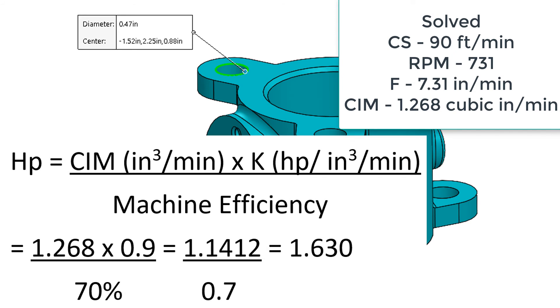Now we can solve for the horsepower. We take the cubic inches of material removal of 1.268 and we multiply by a k factor of 0.9 and assume a 70% machine efficiency we get a horsepower of 1.63.